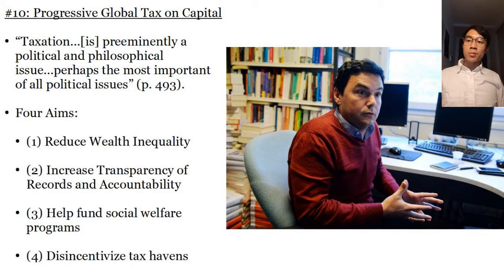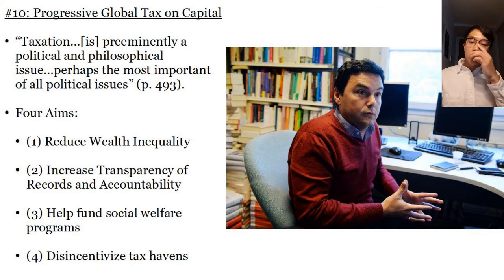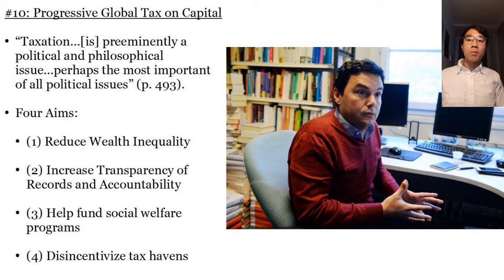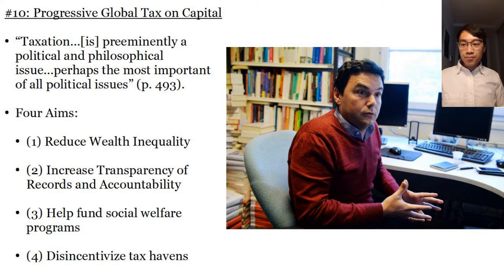More philosophically, Piketty claims that taxation is preeminently a political and philosophical issue — perhaps the most important of all political issues. There are four aims behind his progressive global tax on capital. The first is to reduce wealth inequality. The second is to increase transparency of records and accountability — in order to have records of wealth inequality, the best way is to tax people and force them to keep and report records to government, and typical citizens should be able to access that information. The third aim is to help fund social welfare programs. Fourthly, this disincentivizes tax havens.